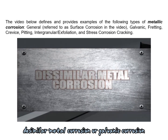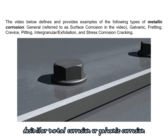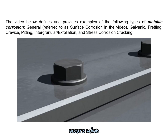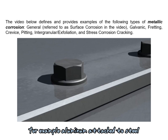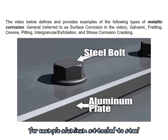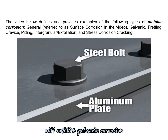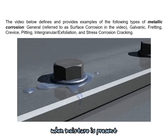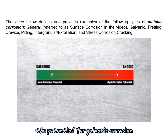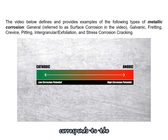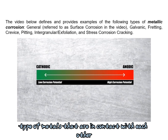Dissimilar metal corrosion, or galvanic corrosion, occurs when different metals are in contact with each other. For example, aluminum attached to steel will exhibit galvanic corrosion when moisture is present. The potential for galvanic corrosion corresponds to the type of metals that are in contact with each other.